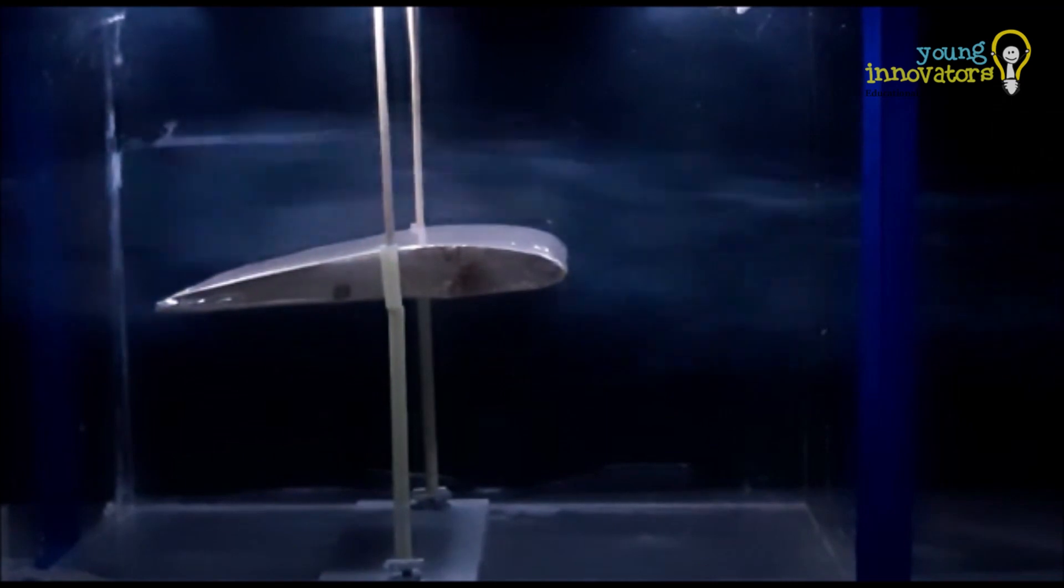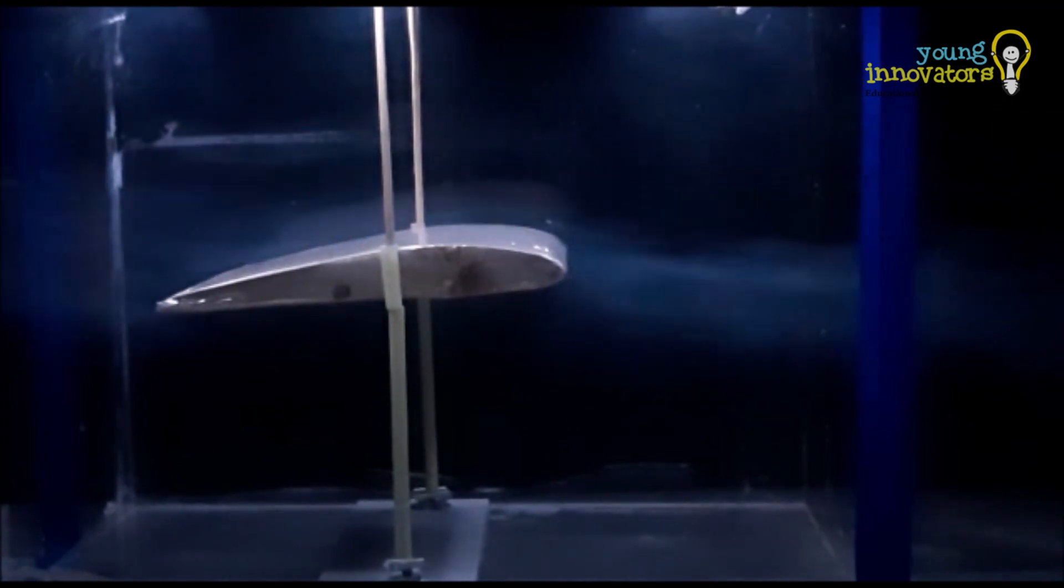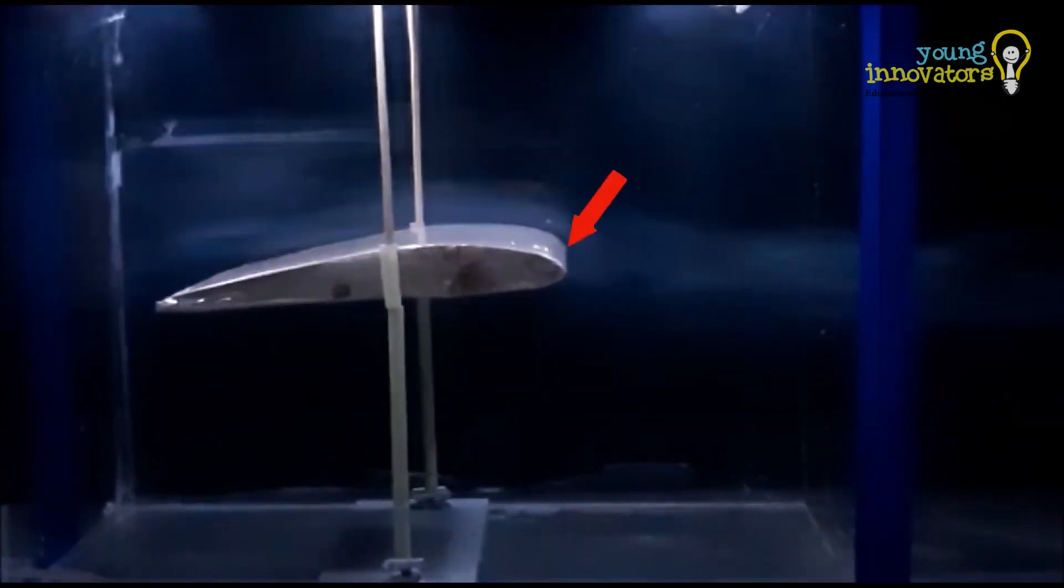As the air flows over the airfoil, we can see that flow is separated at the leading edge and air passes over the upper and lower surfaces of the airfoil.